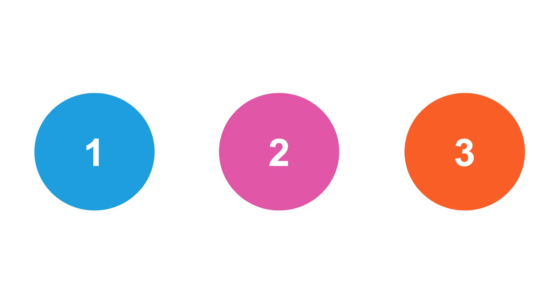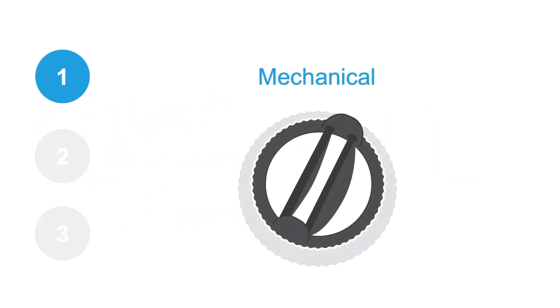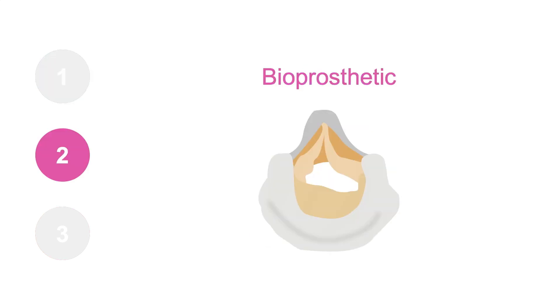Broadly speaking, prosthetic heart valves are divided into three groups. The first group is mechanical valves, made exclusively of synthetic materials. The second group consists of bioprosthetic valves and includes stented, stentless and percutaneous ones.